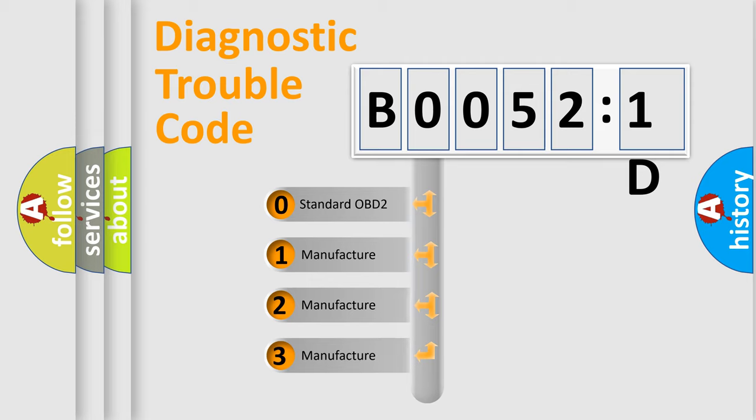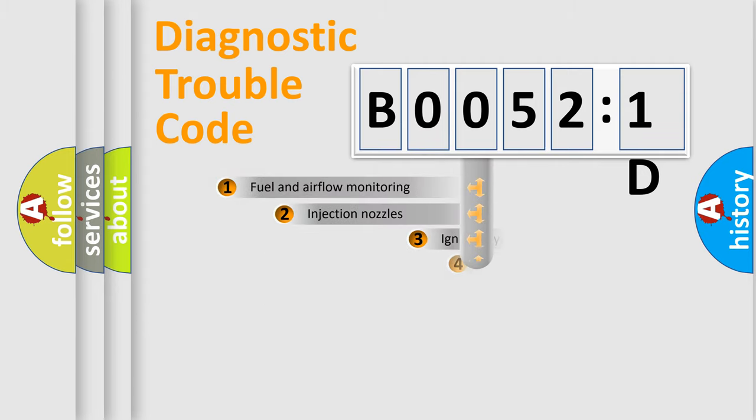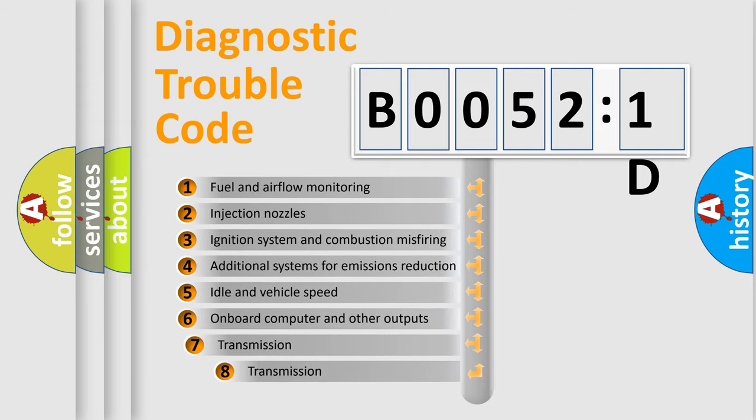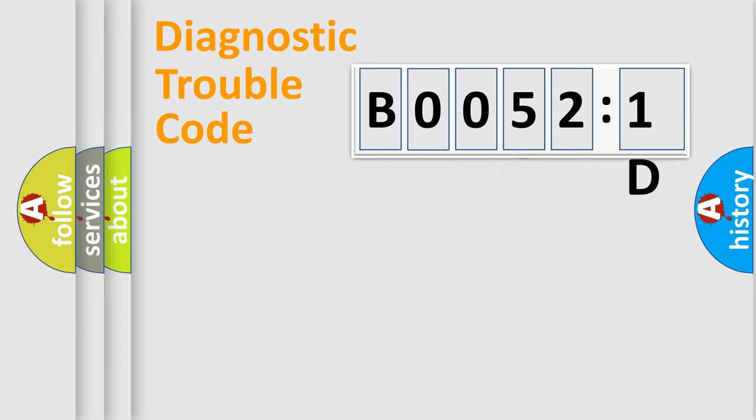If the second character is expressed as zero, it is a standardized error. In the case of numbers 1, 2, 3, it is a manufacturer-specific error expression. The third character specifies a subset of errors. The distribution shown is valid only for the standardized DTC code. Only the last two characters define the specific fault of the group.